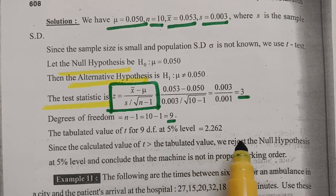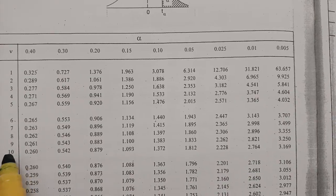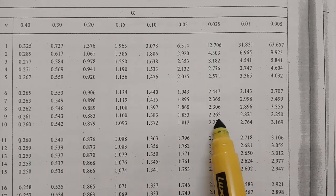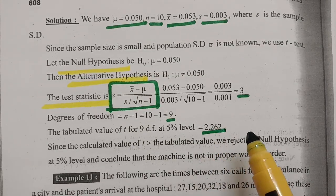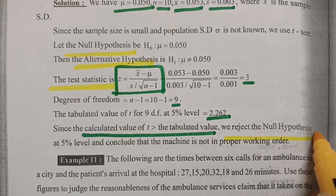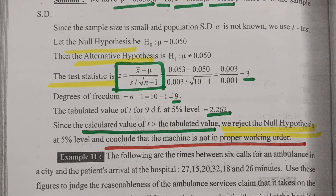The tabular value at 5% level of significance with 9 degrees of freedom is 2.262. Since the calculated value 3 is greater than the tabular value 2.262, we reject H₀. Conclusion: the machine is not in proper working order. At 5% level of significance, we conclude that the machine is not in proper working order. All five steps must be mentioned: null hypothesis, alternate hypothesis, level of significance, test statistics, and the conclusion.